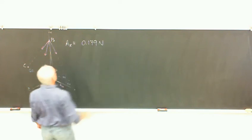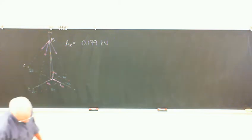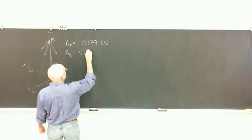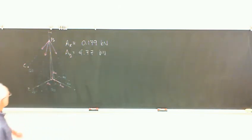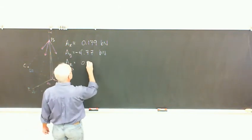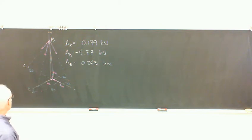So 0.179 kilonewtons on Ax and it was in that direction. Kilonewtons. Is that right? That what somebody got? Okay. Ay is 4.77. And opposite from what I've drawn there because with the forces down it's got to be up. So I'll put a minus sign in just to go with my drawing. Maybe the signs were different just because of the arrows when we started. And then this is 0.243 kilonewtons.